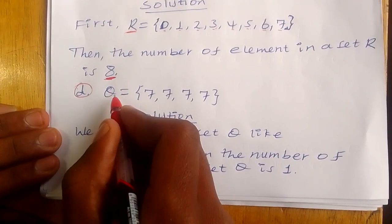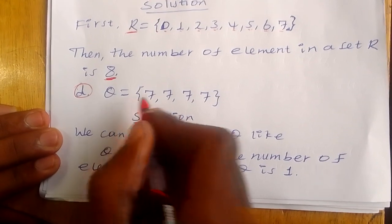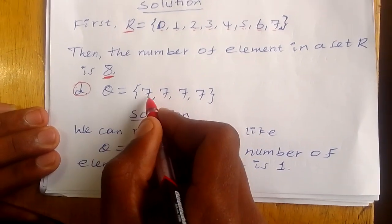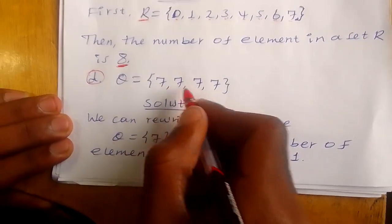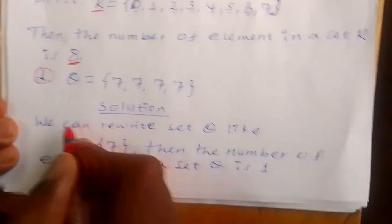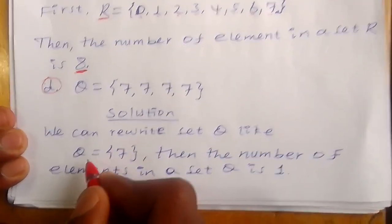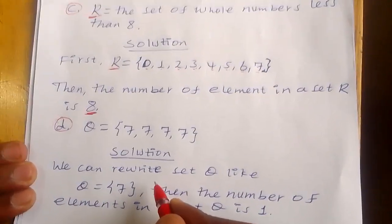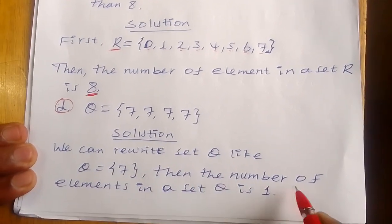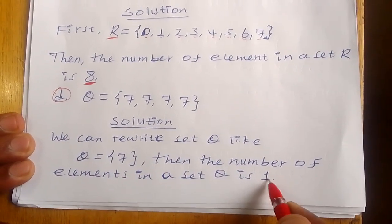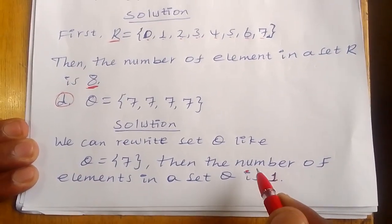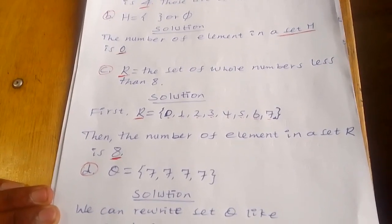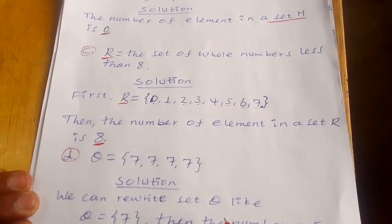The fourth exercise: set Q is equal to {7, 7, 7, 7}. Don't forget — the repetition of a number is not meaningful in a set. So we can rewrite set Q as just {7}. The number of elements in set Q is only 1. Those are all the exercises for today — they are very important for you. If you have any questions, comment for me. Thank you very much.